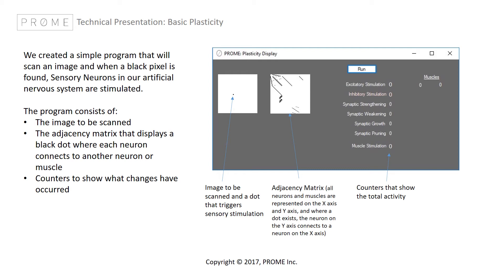The example program also shows the adjacency matrix — the image in the middle — where the x-axis and y-axis are the same neurons and muscles, and where one sees a black dot is where a neuron connects to another neuron or muscle. In addition, we show basic counters that tell us how many times neurons are stimulated or changed.